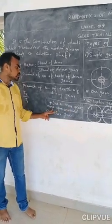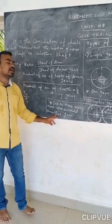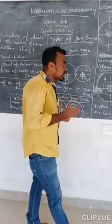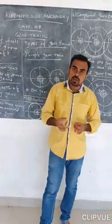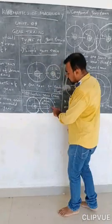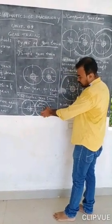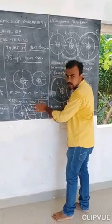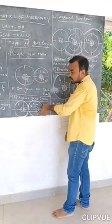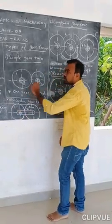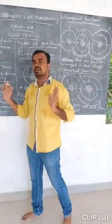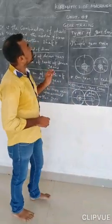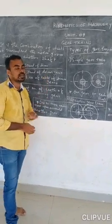In the epicyclic gear train, one or more gears move upon or around another gear. The planet gears revolve around the sun gear. In some cases there are multiple planet gears. That is the basic unit 4 topic — gear trains.